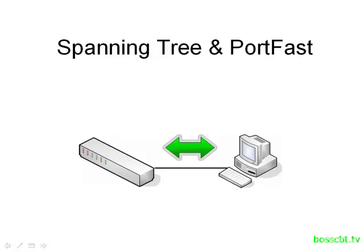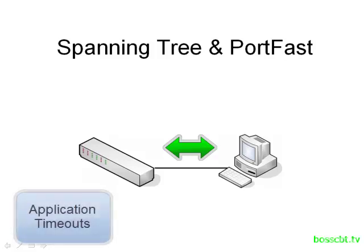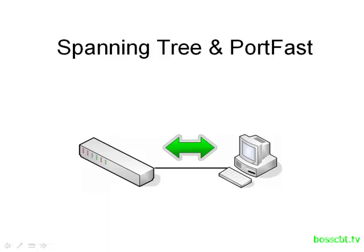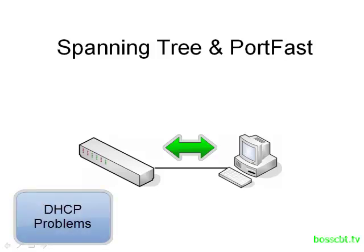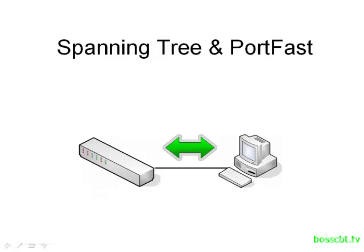And now for some devices, that could cause a problem. Perhaps there's an application or something running on that PC that might time out or encounter some other kind of problem because of that waiting period, because it couldn't communicate for up to 30 seconds. Sometimes PCs will encounter a problem obtaining a DHCP IP address because they just can't contact the DHCP server.